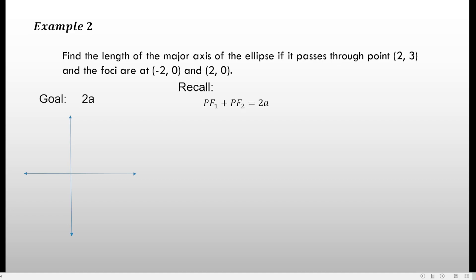To illustrate: the point is (0, 3) and the two foci are (2, 0) and negative (2, 0). If you get this distance and this distance and add them together, you will get the value of 2a. All you have to do is get the distance from the point to focus 1, and from the point to focus 2, then sum them to get 2a, which is the length of the major axis.